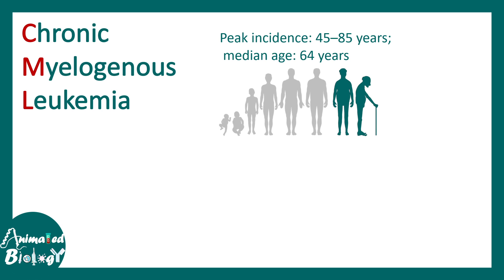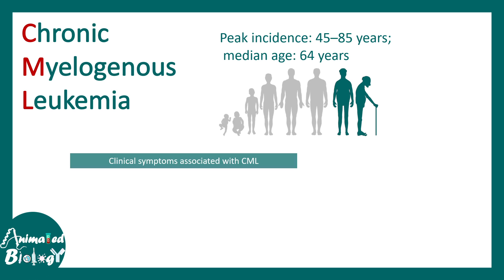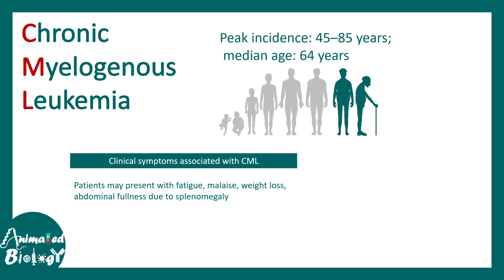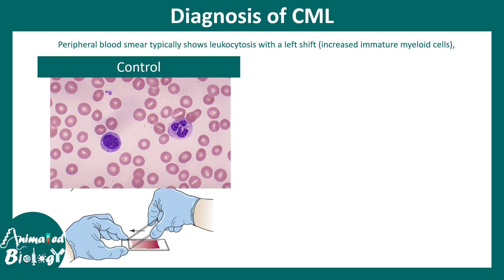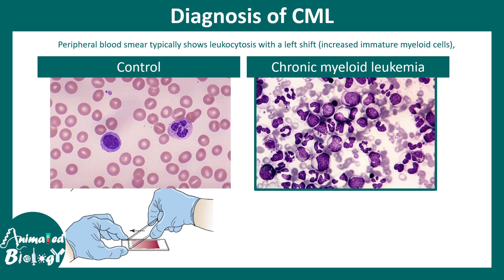Chronic myelogenous leukemia is a late-onset disease; the median age is 64 years. Clinical symptoms may include weight loss, abdominal fullness due to hepatosplenomegaly, and fatigue. Many patients are also asymptomatic and are later detected via peripheral blood smear.